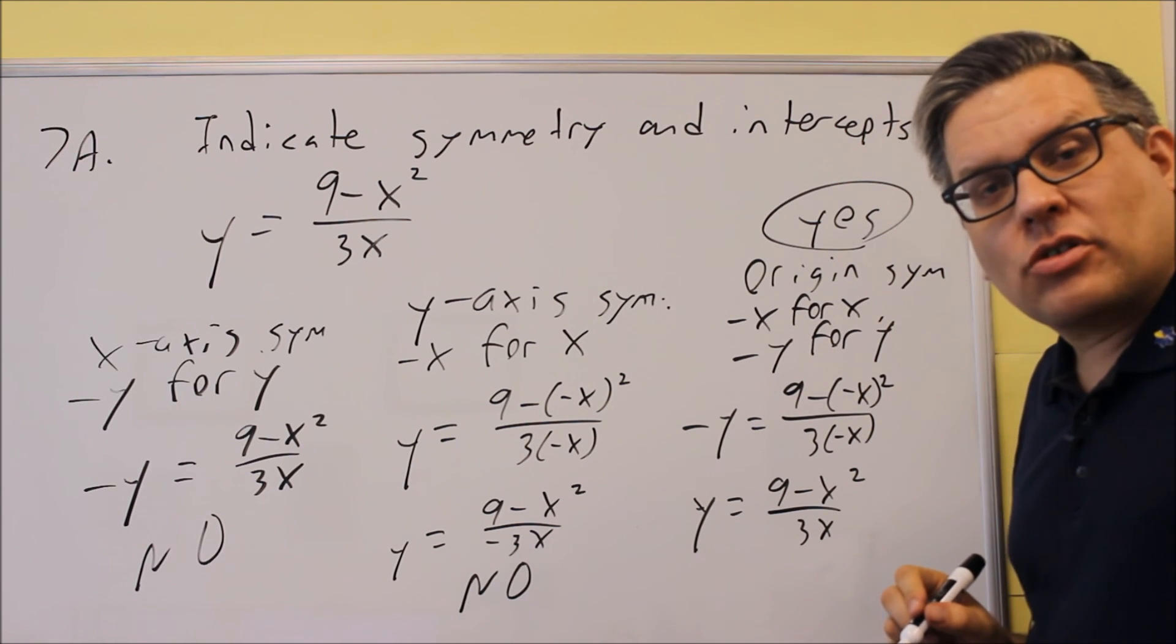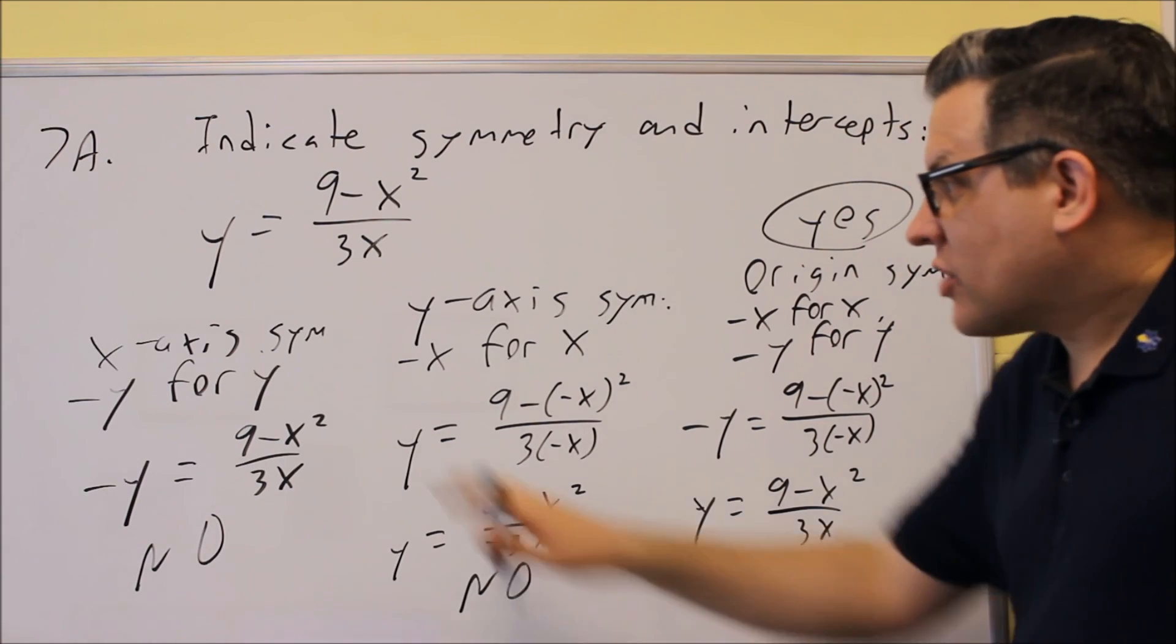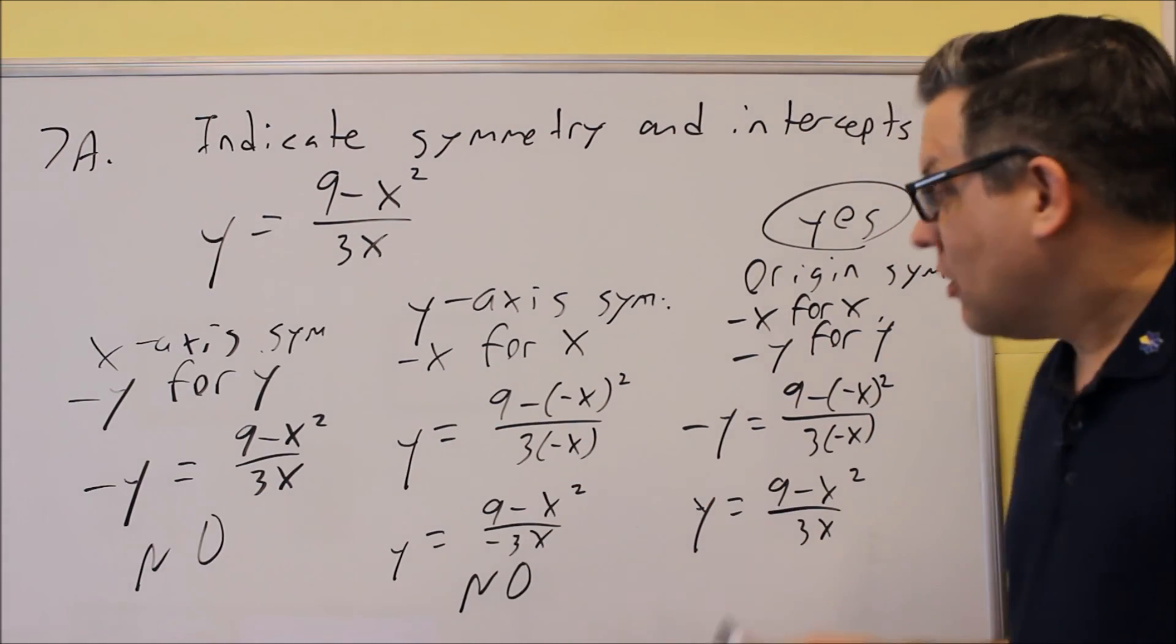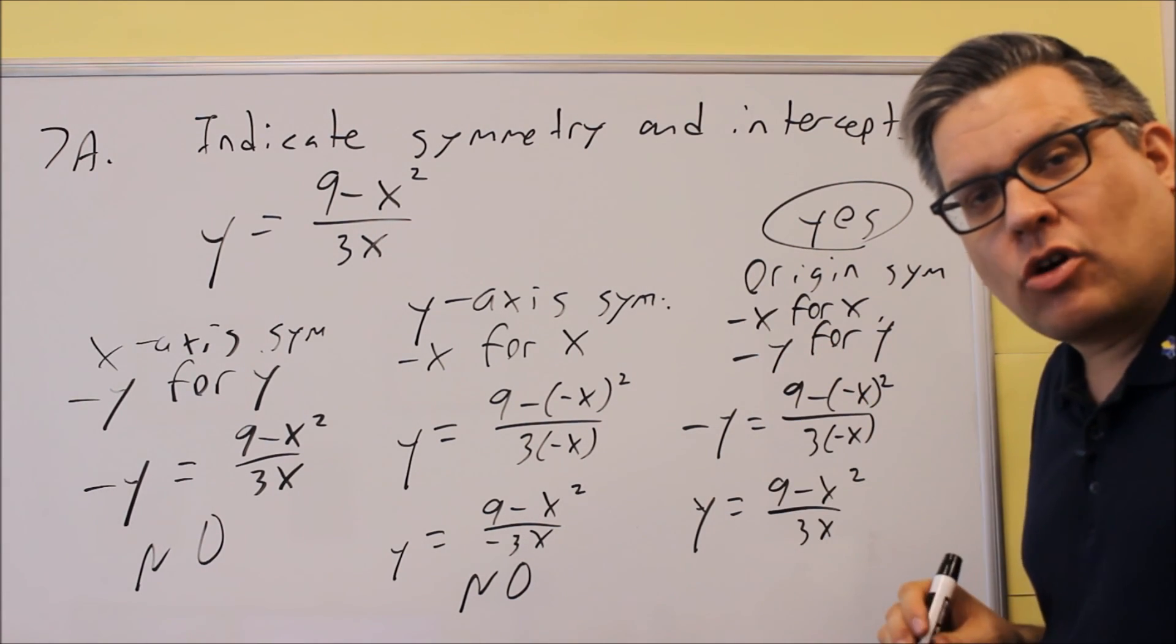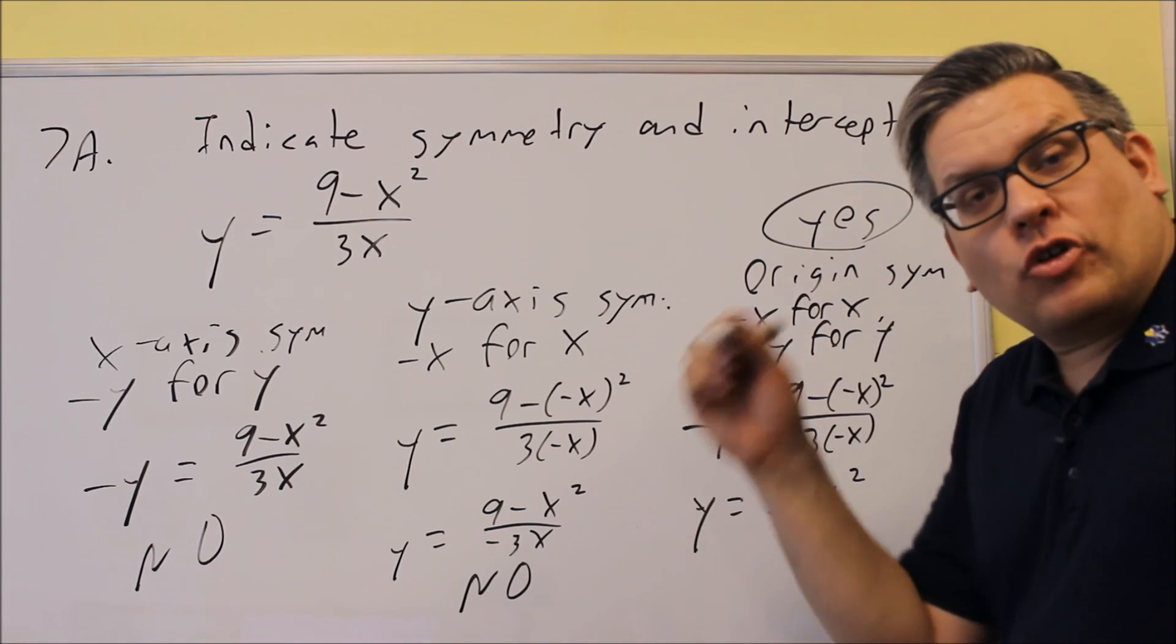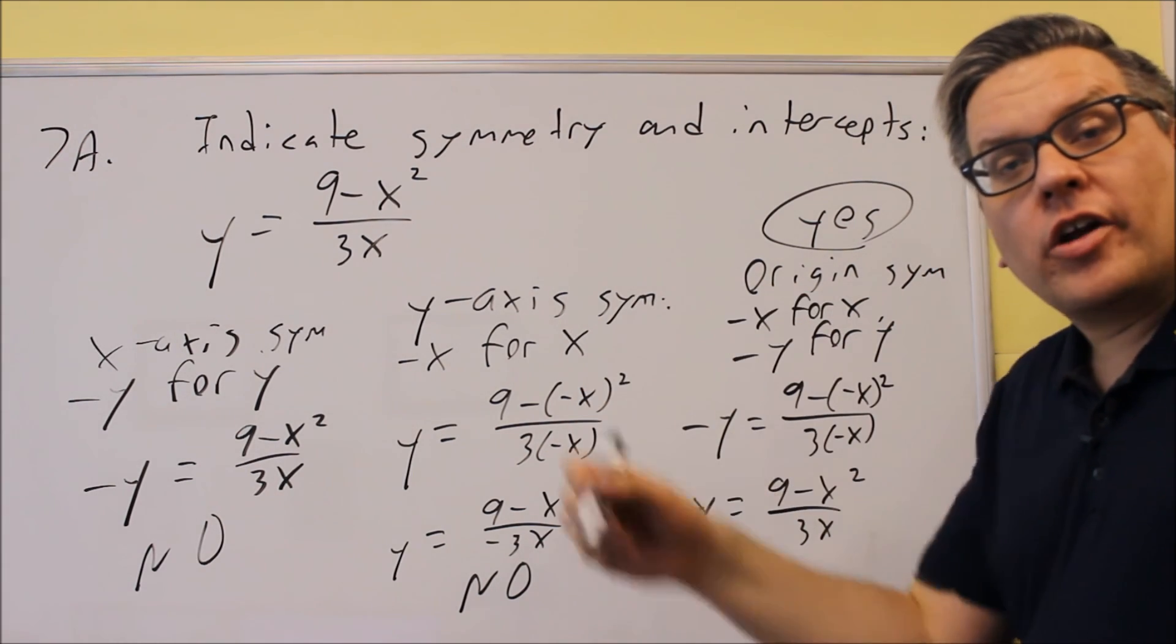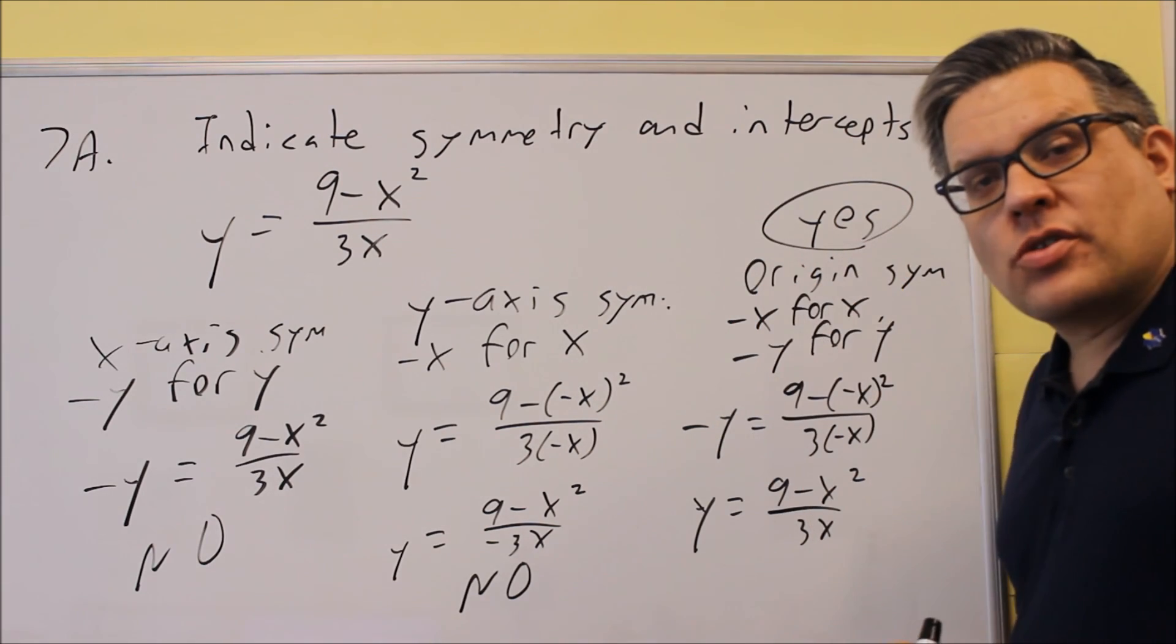So therefore, what I'll put down for my answer is I'm going to put down origin symmetry. So it doesn't have these two, because when I simplify it, I didn't get the same thing I started with, but it does have origin symmetry, and that's what I would put down. So you would put on those blanks x-intercept plus or minus 3, y-intercept would be none, and on the symmetry blank, you would just put in origin symmetry.